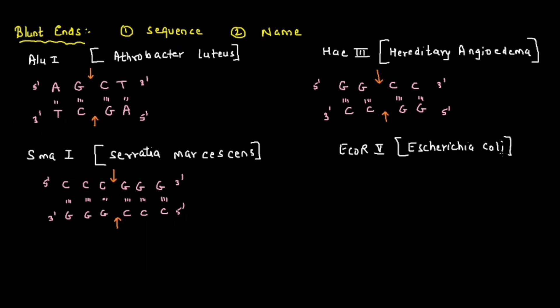Next restriction endonuclease is EcoR5 - Escherichia coli RY strain, fifth to be discovered. The sequence is GATATC, and when you read from 3' to 5' it becomes CTATAG. It is going to cut at T. Remember, blunt end will always cut from the exact center producing two equal fragments. There will be no overhanging piece of DNA.